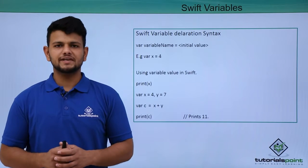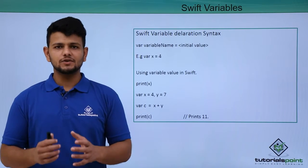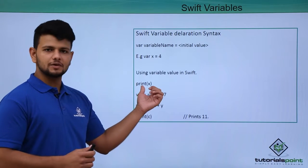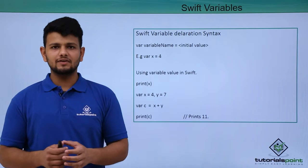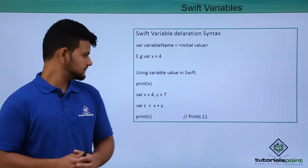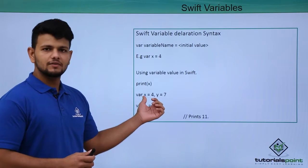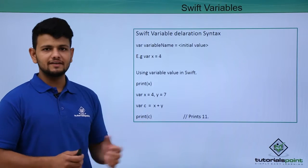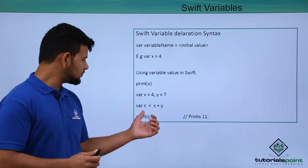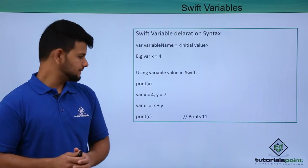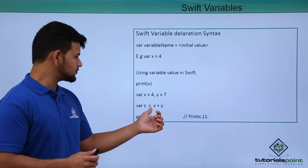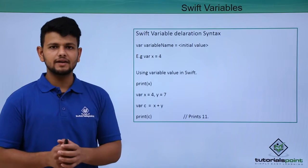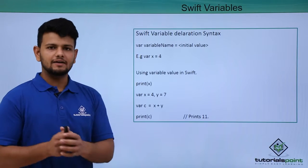Using variable values in Swift: print is a keyword in Swift for printing any value to the console. The syntax is to use print with the variable inside brackets. In this example, we assign x the value 4 and y the value 7, then store their sum in variable c. When we print c, this will print 11 on our screen, as x is 4 and y is 7.